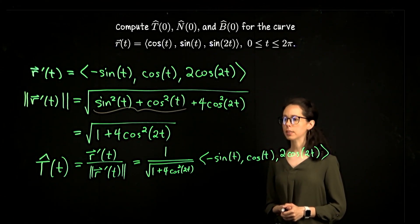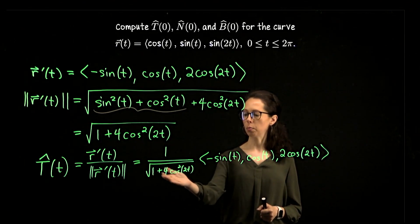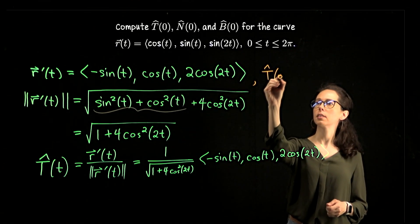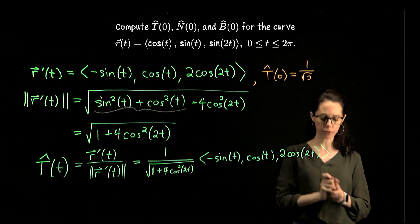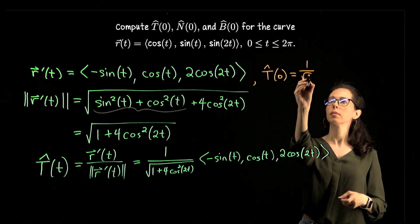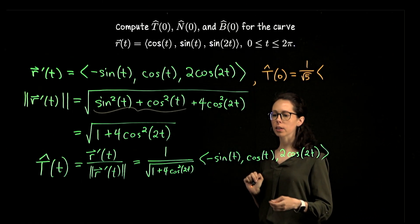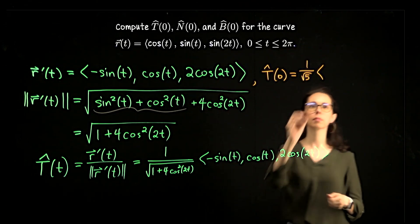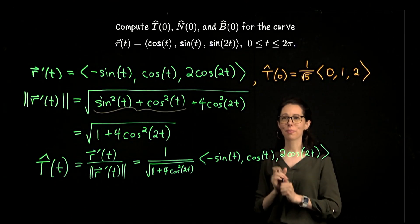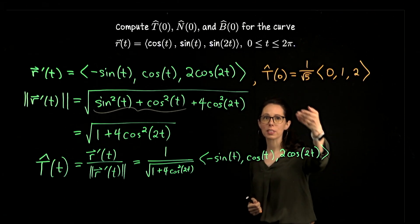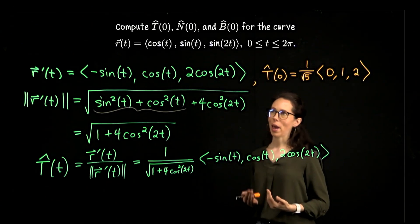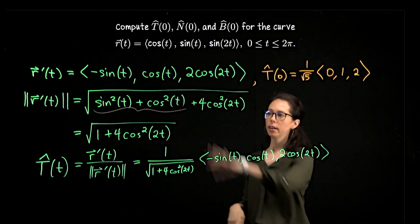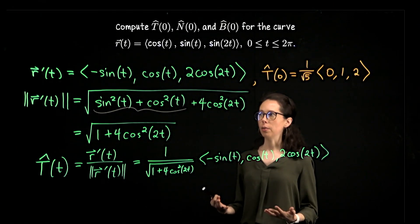The first way: since we have the expression for the unit tangent as a function of time, let time equal 0. Cosine of 0 is 1, so the denominator becomes the square root of 1 plus 4, which is the square root of 5. The coordinates become: sine of 0 is 0, cosine of 0 is 1, and 2 cosine of 0 is 2. So T hat at 0 is 1 over root 5 times the vector (0, 1, 2).